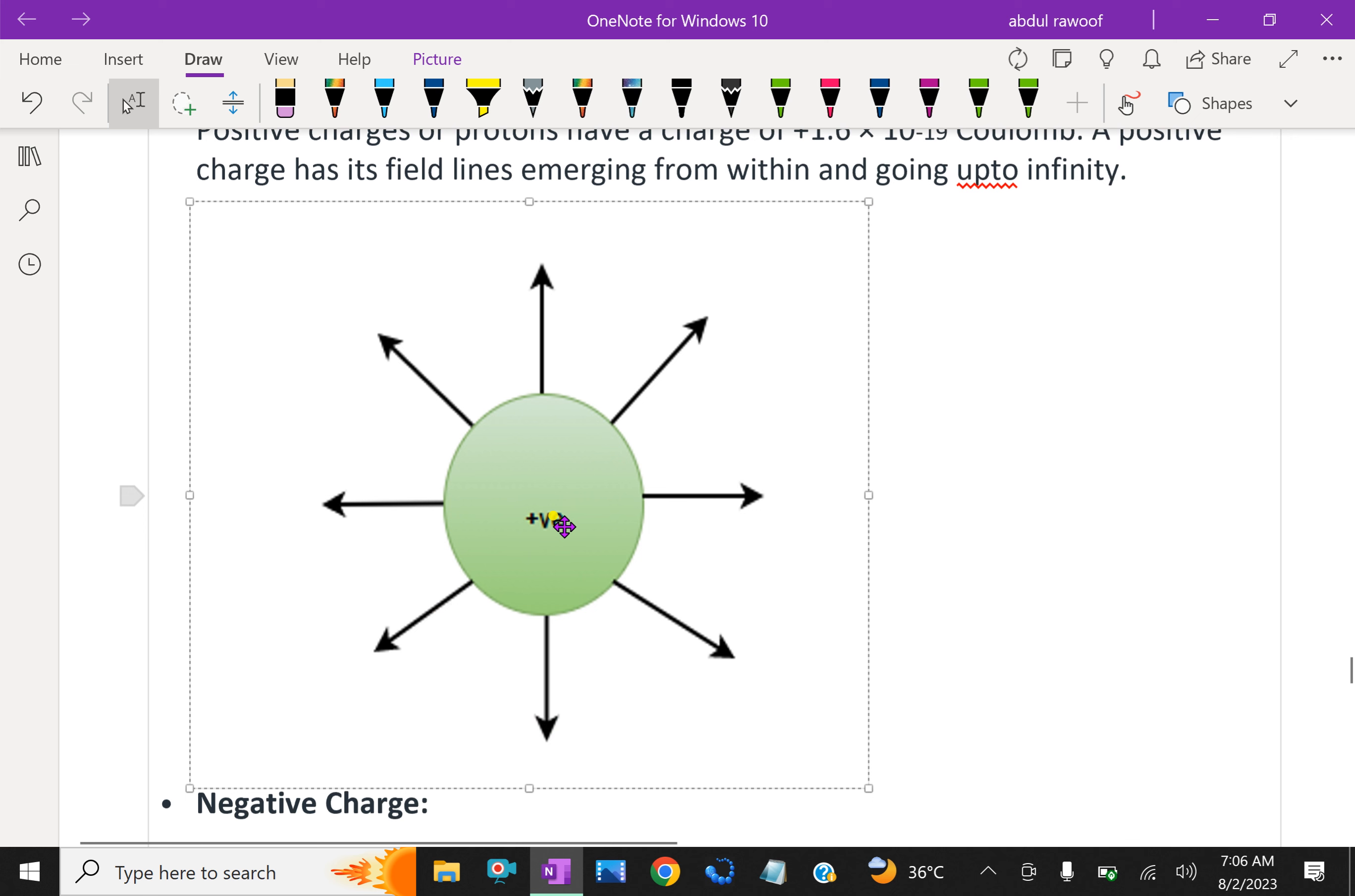For imaginary purposes, this is a positive charge. Here the charge field lines are going outwards from the point charge, up to infinity.